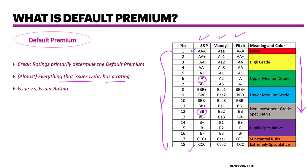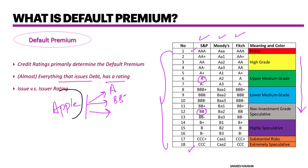Every country has its own rating agencies as well, which are private companies. There are many, many rating agencies — it's not like there are only three. Even the bonds that Apple is issuing can have a rating specific to the bond itself, separate from Apple's company rating. One bond can have an A rating, another can have a BB negative rating and so on.